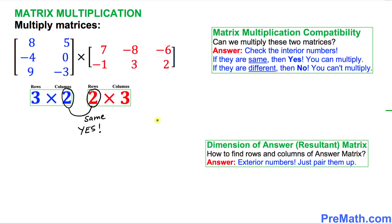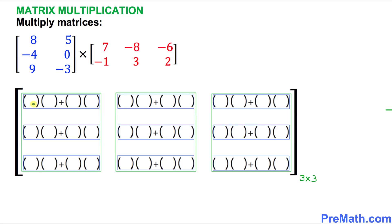The next thing we want to check is the dimension of our answer, or resultant, matrix — that is, how many rows and columns it is going to have. To find this, look at the exterior numbers, the outside numbers. Pair them up: this is going to become three by three. That means our answer matrix is going to have three rows and three columns, and here is the road map of our answer matrix.